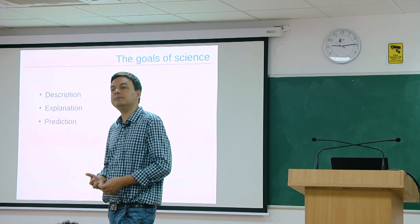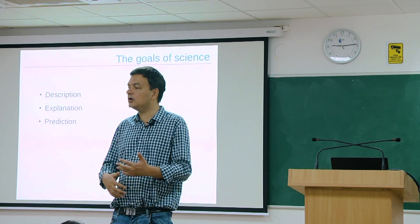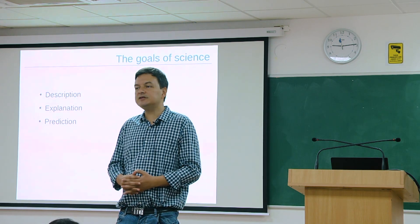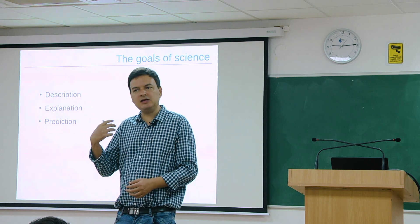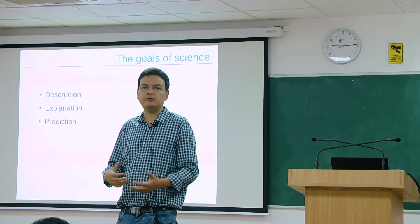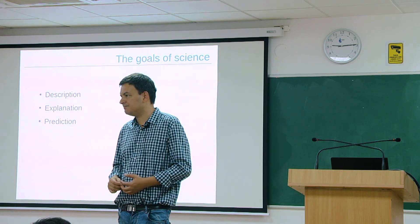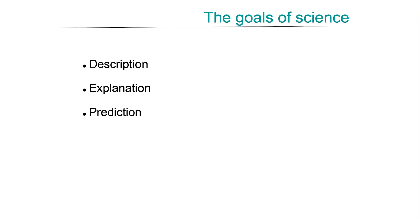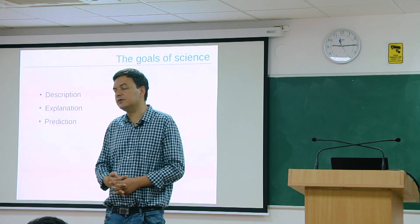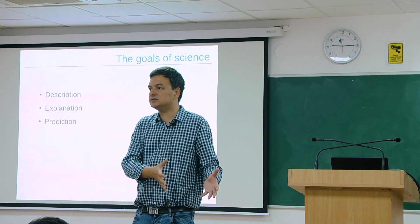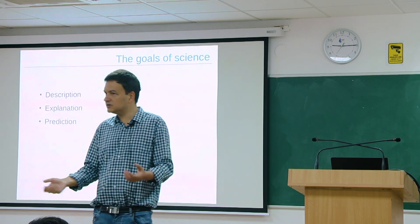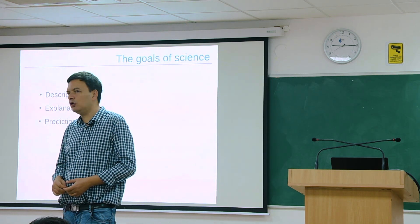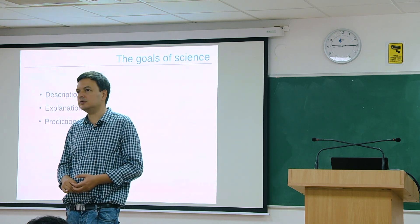We often don't want to stop at description. Once we've described a pattern, we go on to ask why questions — our brain tries to make meaning of it. There must be some reason why there are more species at the equator than towards the poles. We also want to explain the patterns in nature that we see. We don't just say there are more tigers in this reserve than that; we want to find out why — what is it about this reserve that allows it to support more tigers, or beetles, or butterflies.